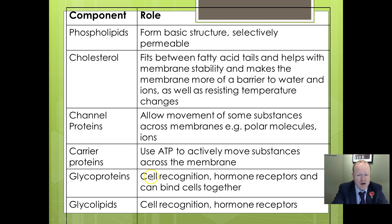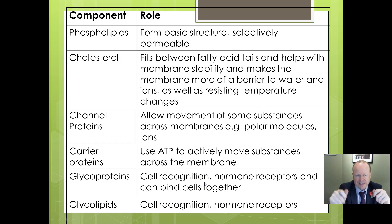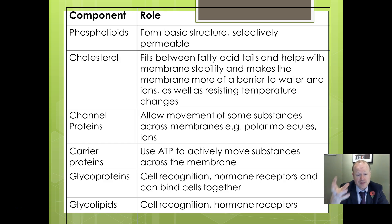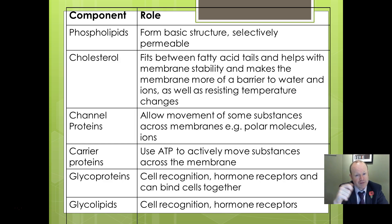Glycoproteins are sites of cell recognition and hormone receptors, and also connect and bind cells together. Glycolipids can also function in cell recognition and as hormone receptors. Cell recognition refers to the body being able to recognise cells as part of itself — if your body doesn't recognise your own cells, that's what we call autoimmune disease, where your immune system attacks your own body cells. You want your body to recognise your own cells, and also to recognise foreign invaders: if a bacterium invades, you want your body to recognise it as not part of you and produce an immune response.